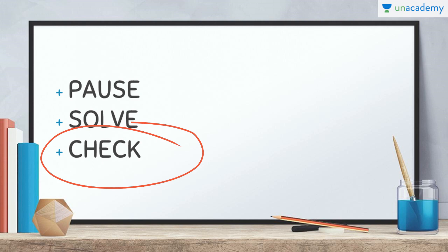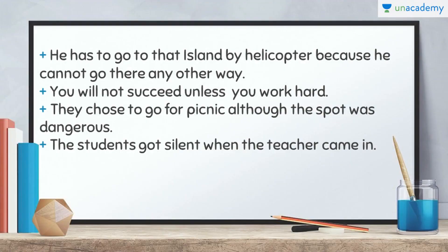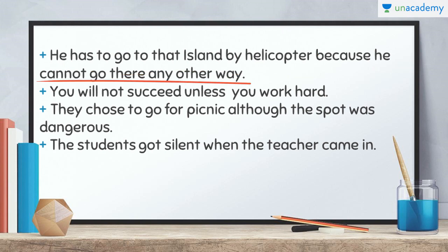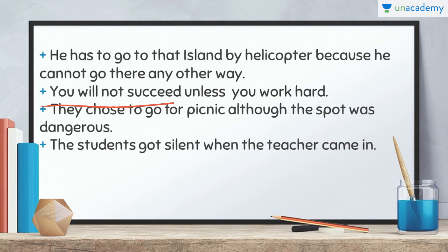After you are done, you can check your answers along with the solutions given over here. Solutions are like so. First: 'He has to go to that island by helicopter because he cannot go there any other way.' The reason is explained in the later part of the sentence, so we use 'because'. Second: 'You will not succeed unless you work hard.' Whenever we use 'unless', there is a little change in the second sentence — we directly write the condition. This is the condition, and we directly write it when we use 'unless'.